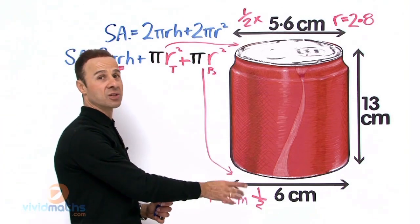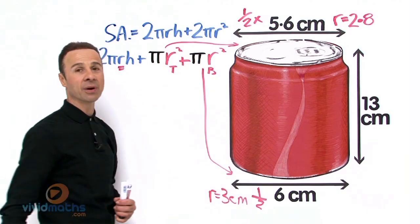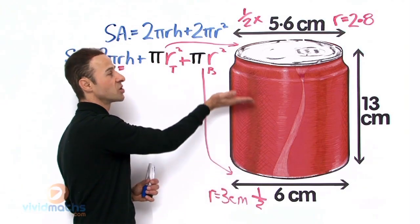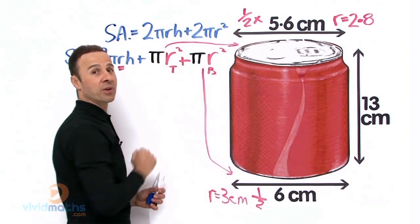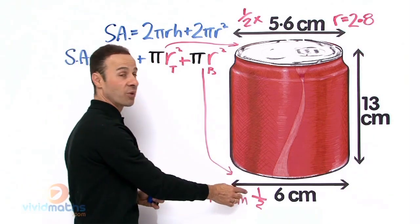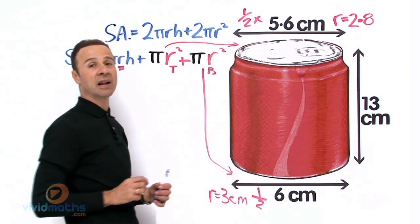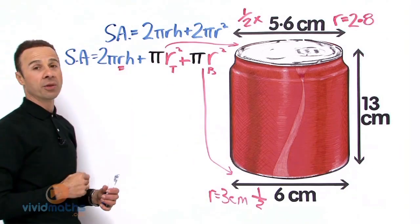It is the bottom one we pick, and the reason why we pick that one is because for the vast majority of this can, all the way up to there just before the kink, it is actually going to be this radius. It gets smaller only at the last minute.